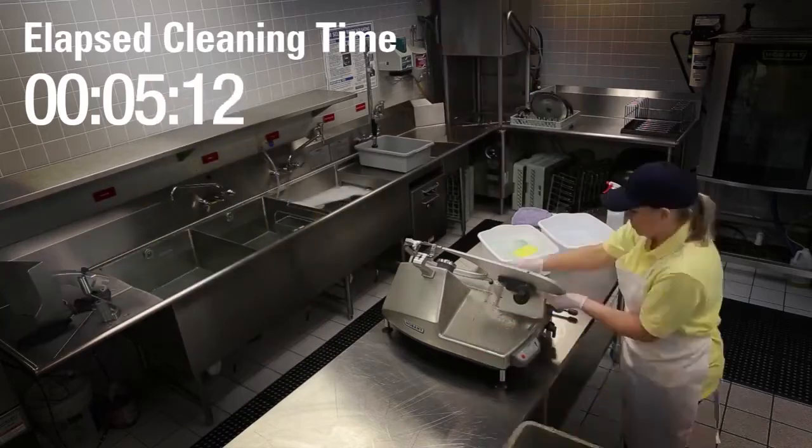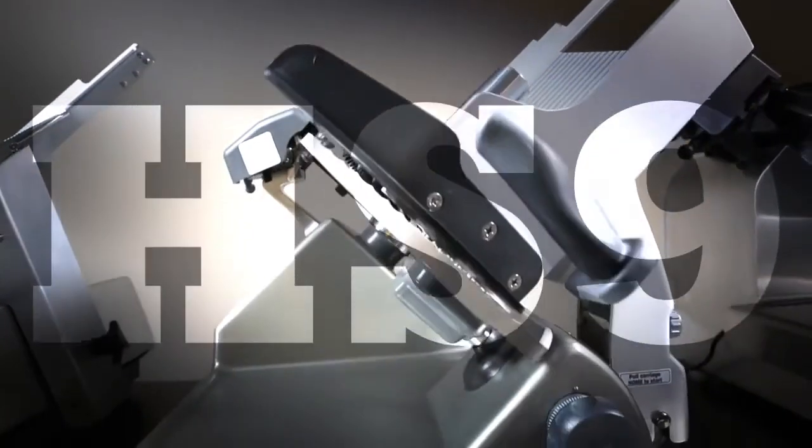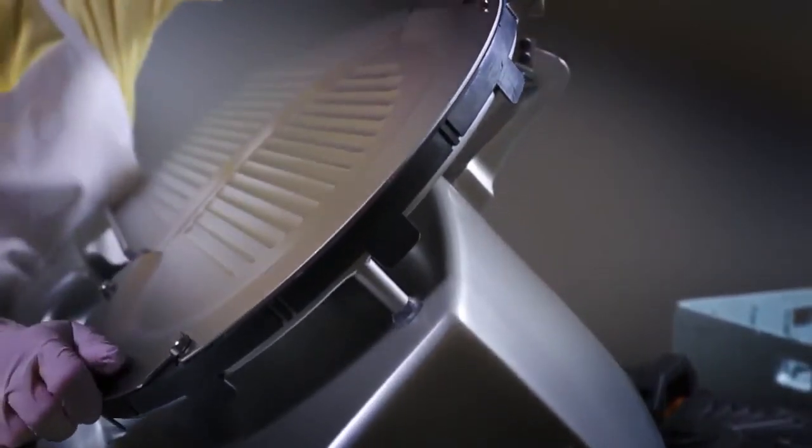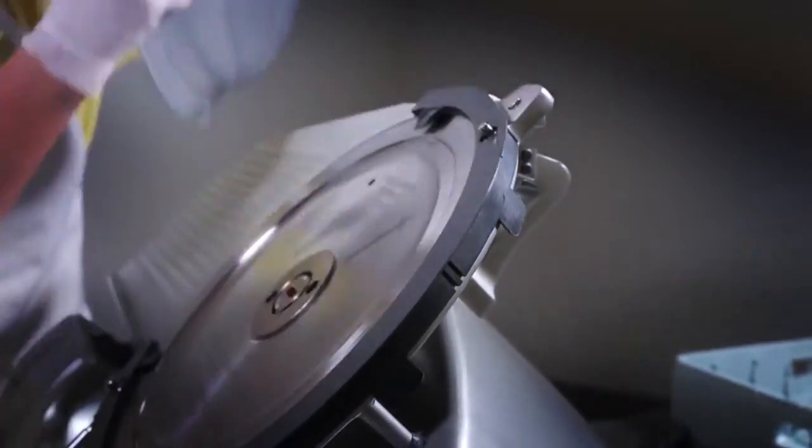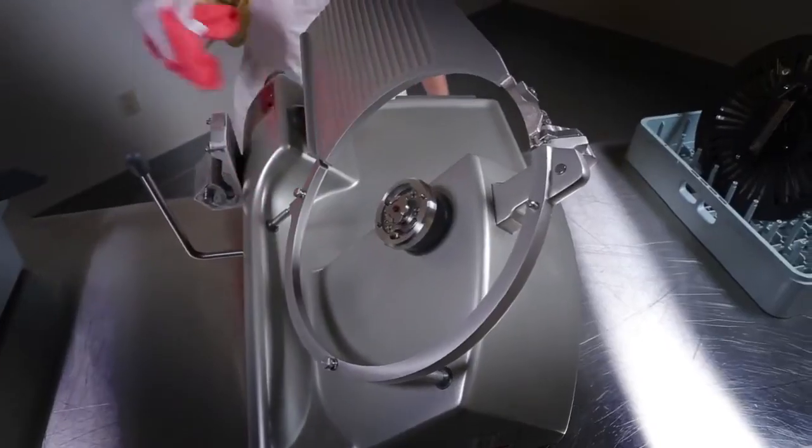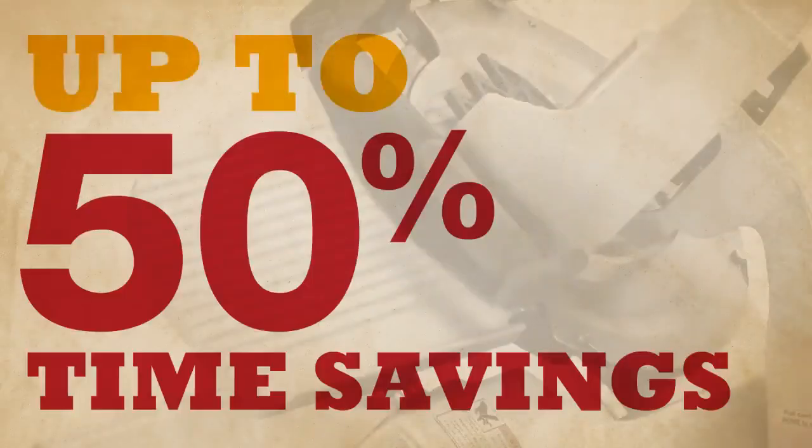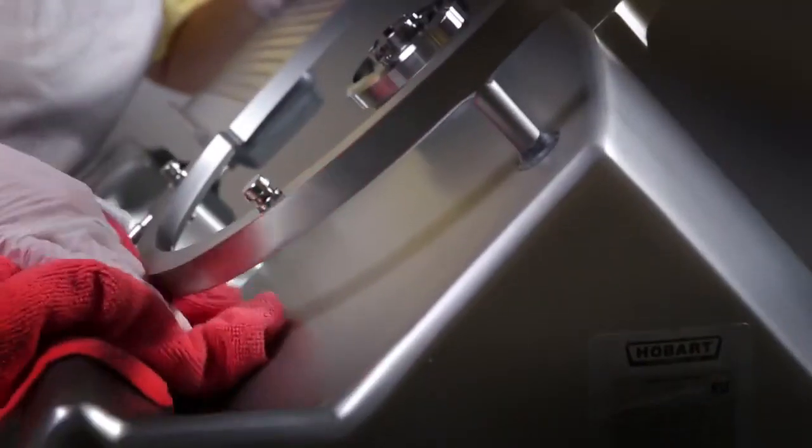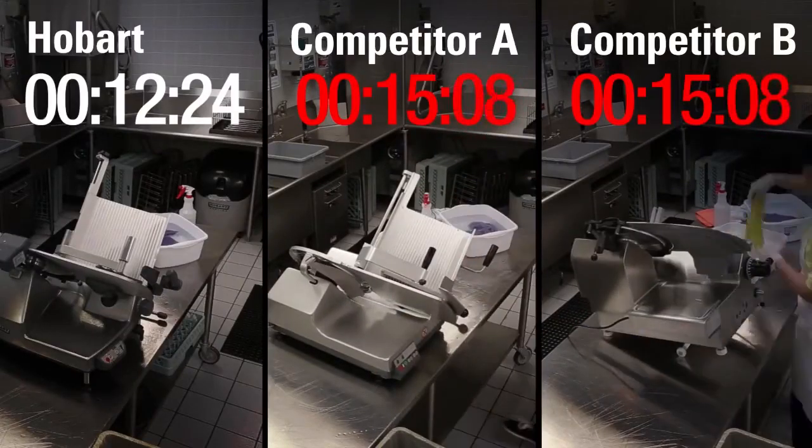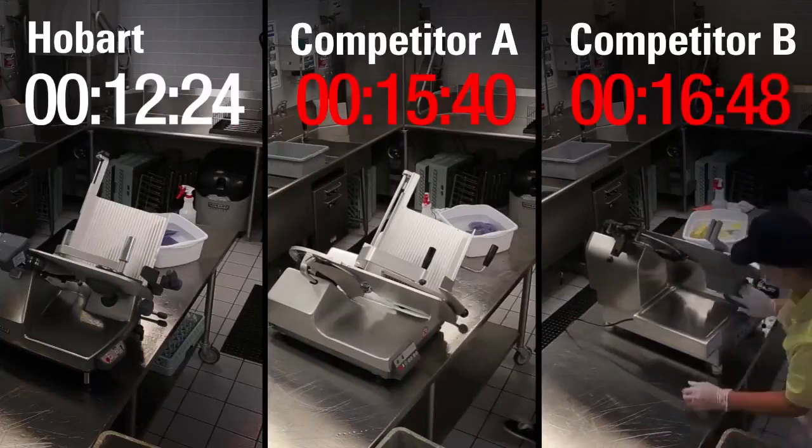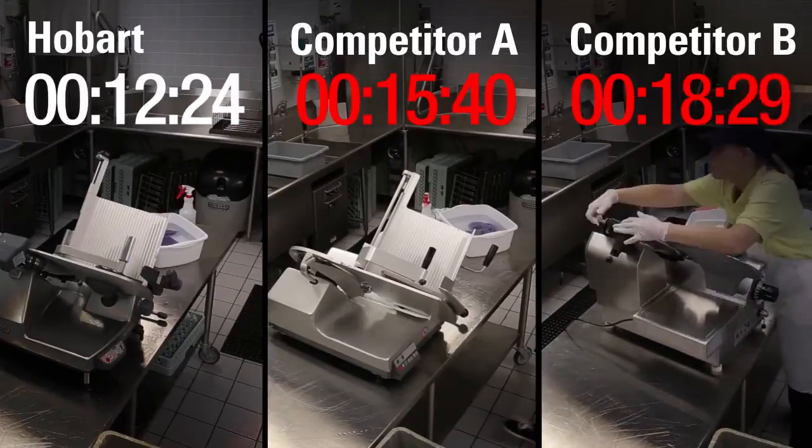That's why the HS9 is built to meet your need for speed, with exclusive features like removable ring guard cover and removable carriage system to make cleaning easier and faster. Up to 50% faster, according to a national customer that slices more than 1.5 million pounds of meat a year. So while the others are still wiping down after lunch, you'll be counting the thousands in labor costs saved.